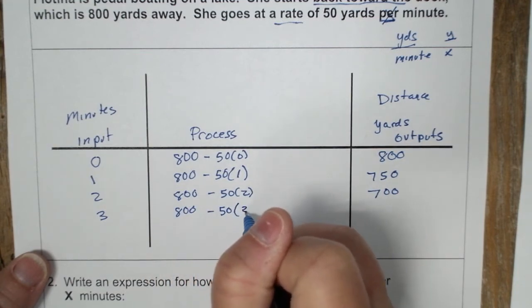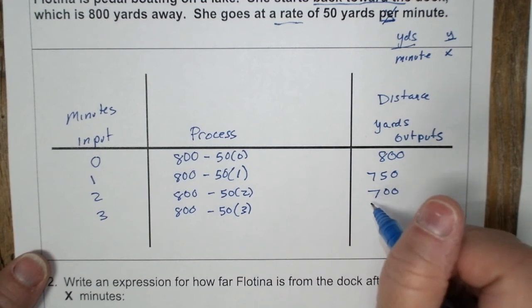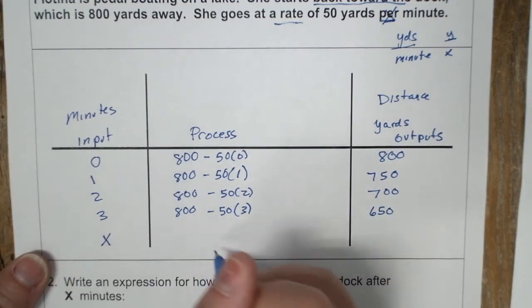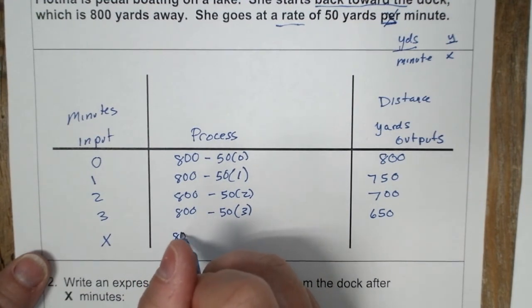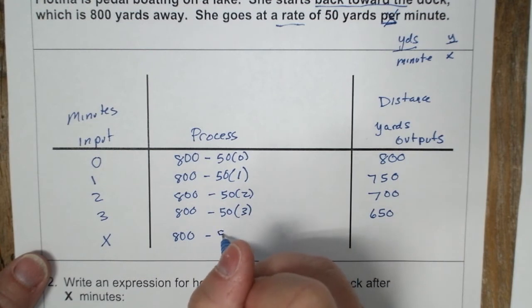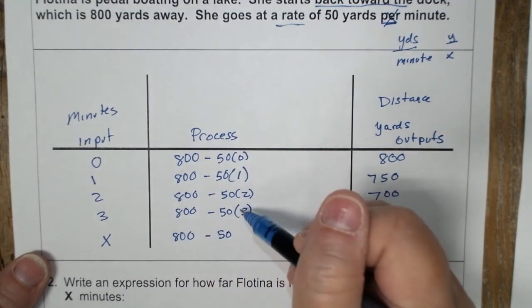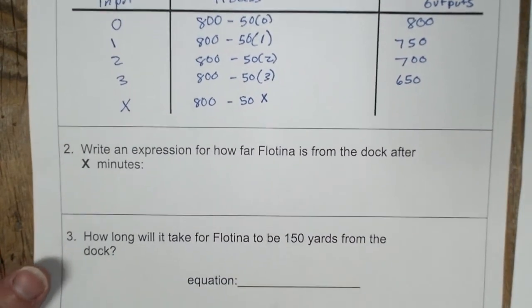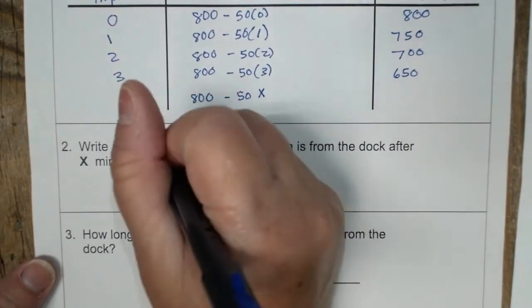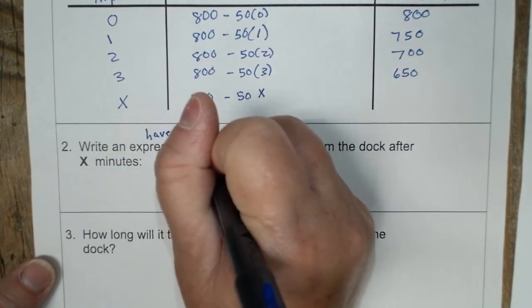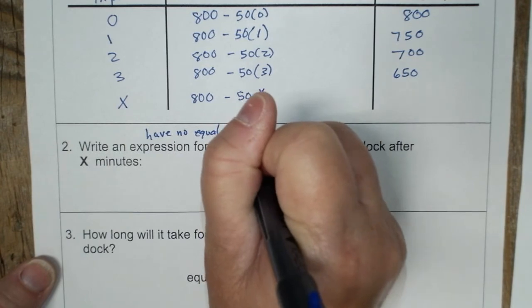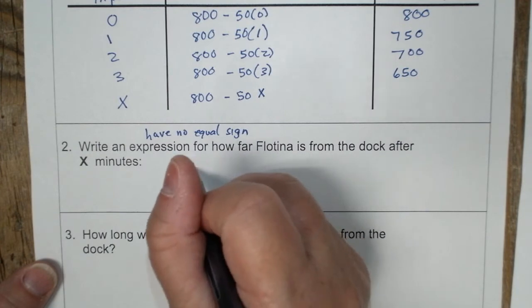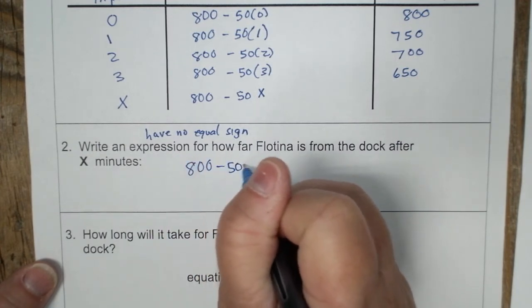You need to do this as long as it takes you to recognize the pattern. And so for every X that I input, here's my constant. Here's my rate. And this is what is changing, which becomes my variable. So write an expression. And we know that expressions have no equal sign. So what I'm going to do is I've already gotten it right here. And it's 800 minus 50X.